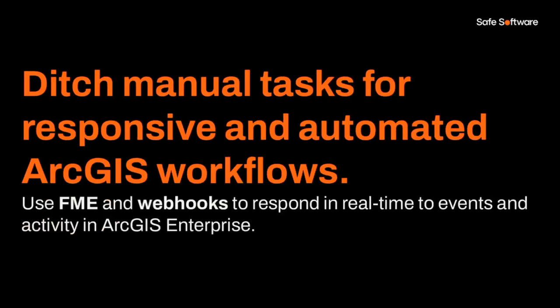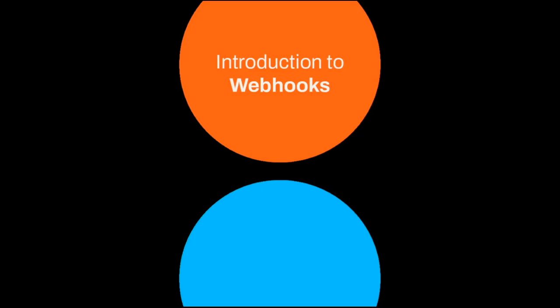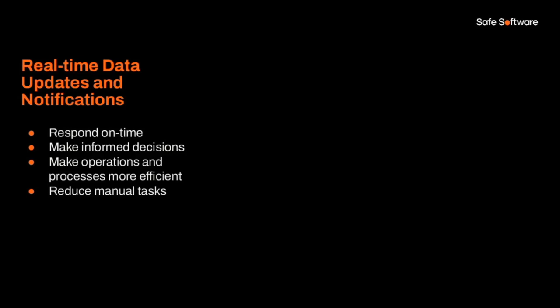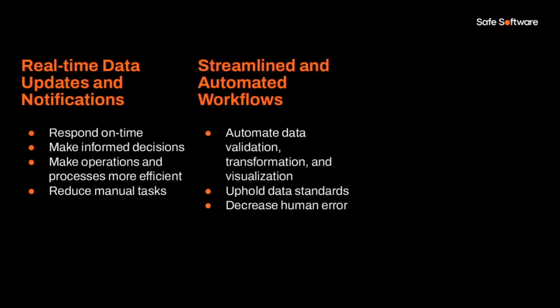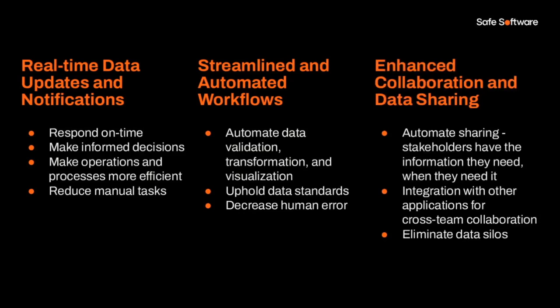By automating some of these processes we can free up time for things we'd rather be doing. Webhooks are a great way to automate tasks that are time-sensitive or request-driven. Real-time information flow enables better decisions, reduced response time, and overall efficiency. We can enjoy better data quality by automating validation, transformation, or analysis of new data. We can automate sharing information with external stakeholders — instantly connecting the planning department to parks, or engineers with administration — so everyone has what they need.